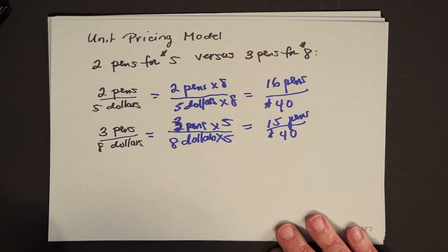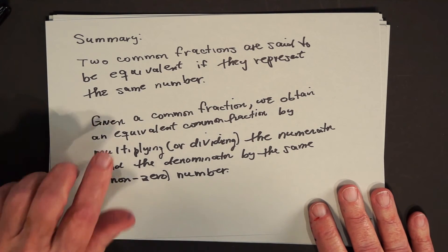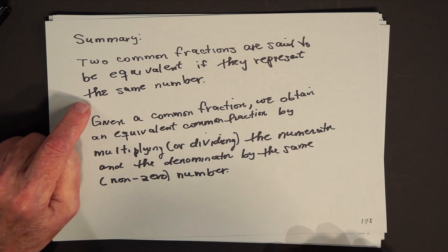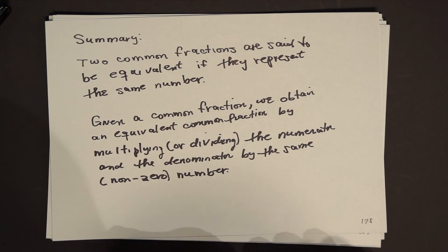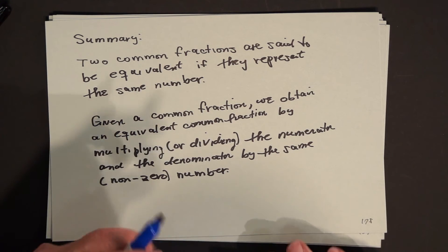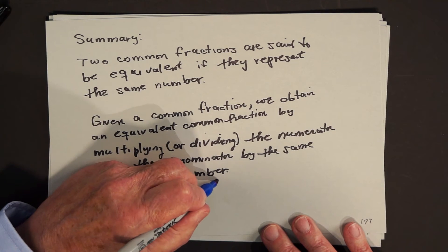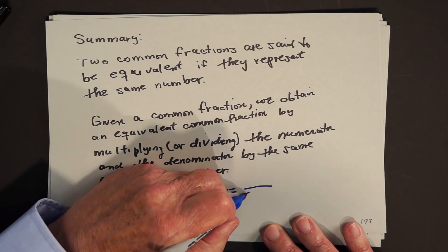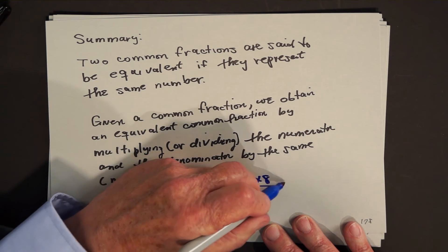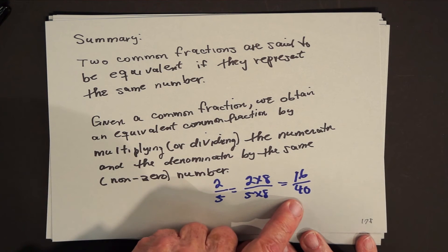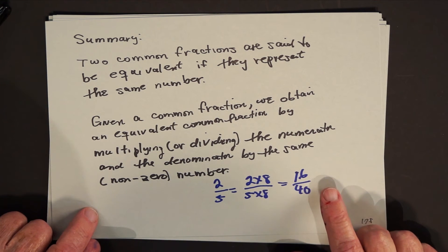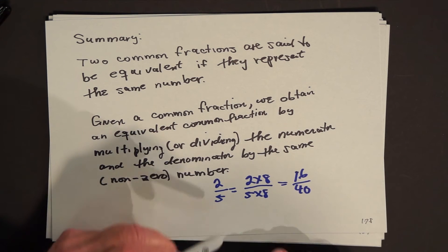In summary, we showed that two common fractions are said to be equivalent if they represent the same number. Given a common fraction, we obtain an equivalent common fraction by multiplying or dividing the numerator and denominator by the same non-zero number. We tend to read formulas from left to right — but read it right to left: 16 fortieths is equivalent to 2 fifths, and to get 2 fifths from 16 fortieths, we didn't multiply by 8, we divided both by 8.